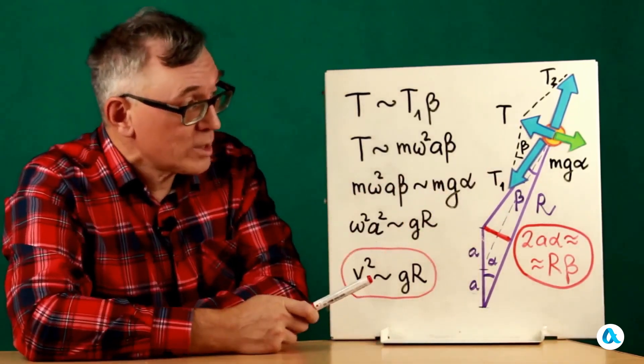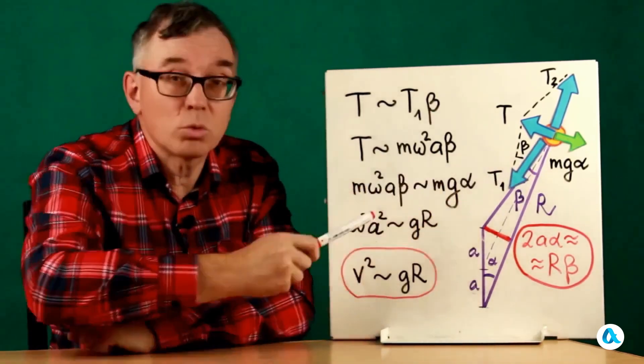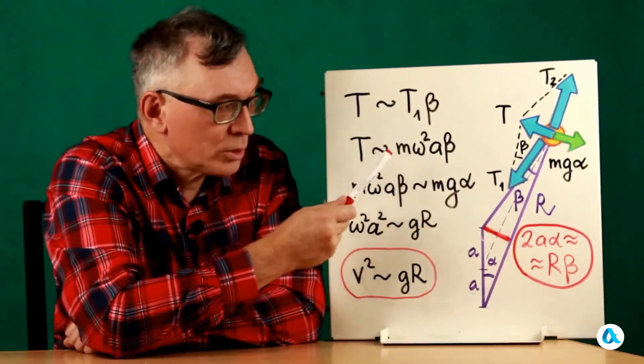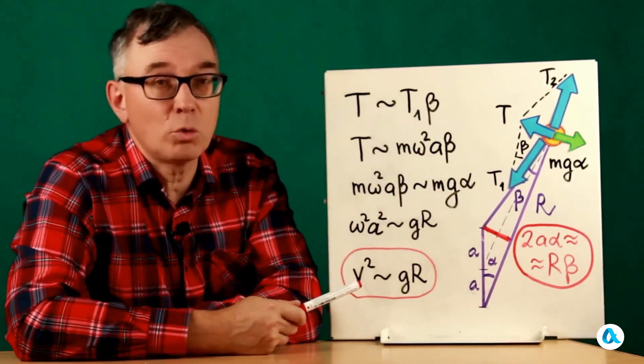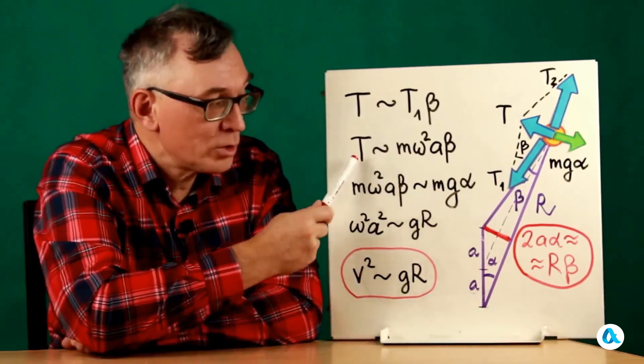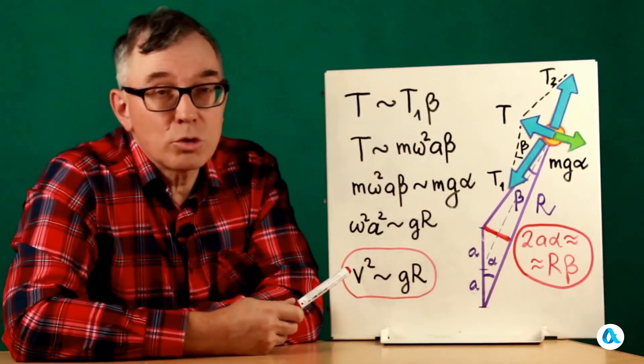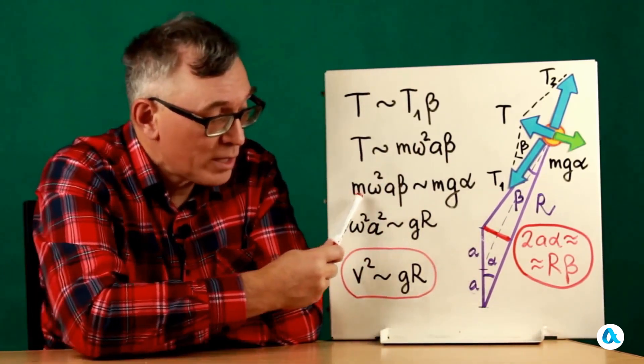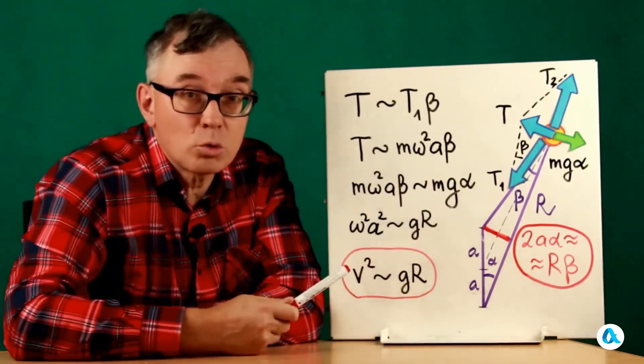These forces form a certain angle between them. So the resultant force T can be estimated as the magnitude of force T1 multiplied by angle β. We can estimate force T1 as the mass of the load multiplied by the amplitude acceleration ω²a. Then the restoring force T will have this form.